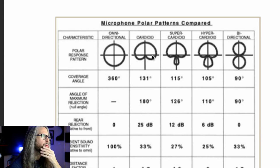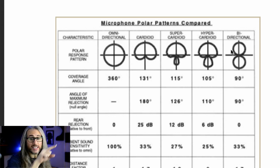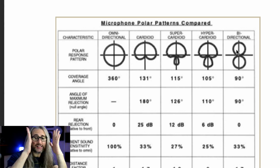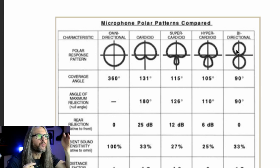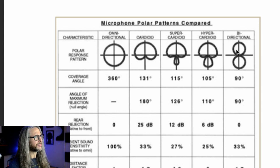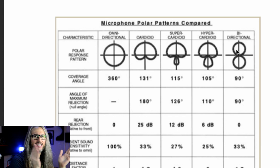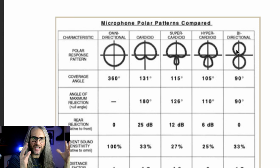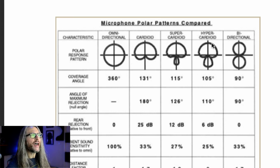Bi-directional is the figure-eight pattern — it picks up from both sides of the capsule. You can have two heads face to face, singing or harmonizing — that pattern is wonderful. You see it a lot with background vocals. When I capture hand claps, if I can get a group of people, I do it with figure-eight and it gives you a nice, homogenized kind of sound.